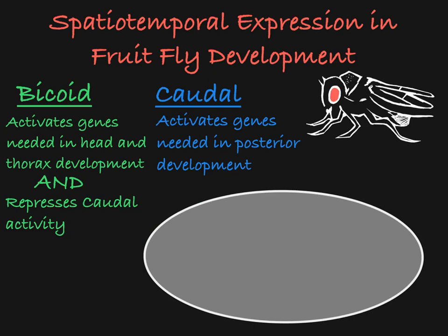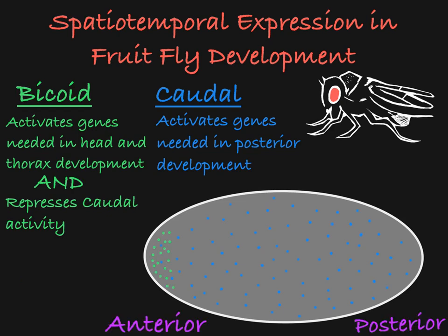In embryonic development, the Caudal protein is expressed uniformly throughout the embryo, while the Bicoid protein exists in high concentrations at the anterior portion of the embryo.